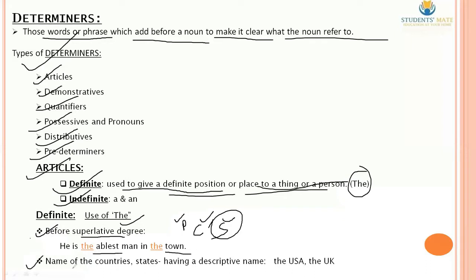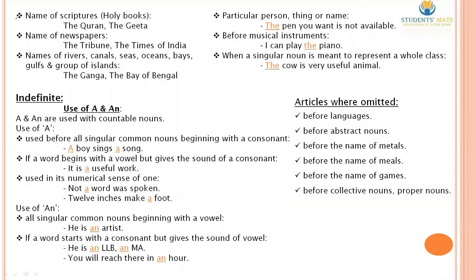Second, 'the' is used before the names of countries and states having a descriptive name — for example, The United States of America, The UK. Also before the name of scriptures, for example, the Quran, the Gita. Before the name of newspapers — the Tribune, the Times of India. Before the names of rivers, canals, seas, oceans, bays, gulfs, and groups of islands.